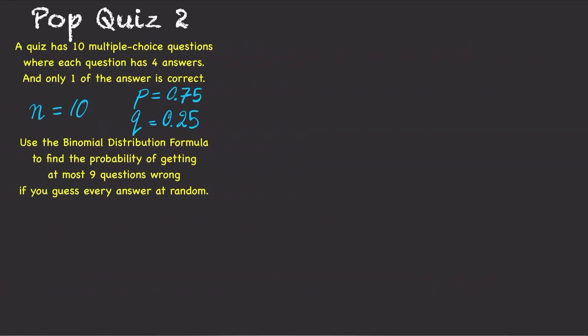Use the binomial distribution formula to find the probability of getting at most nine questions wrong if you guess every answer at random.